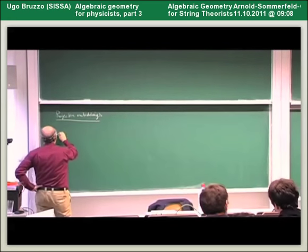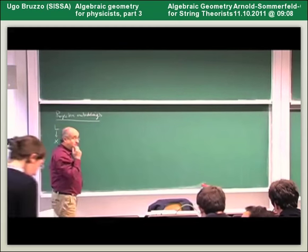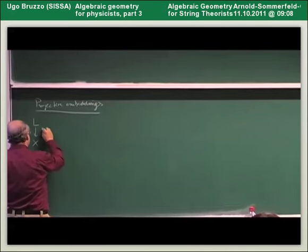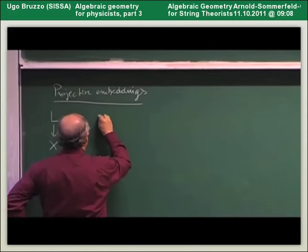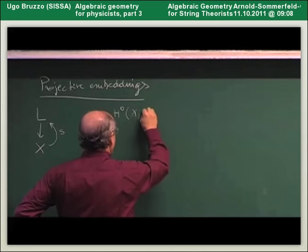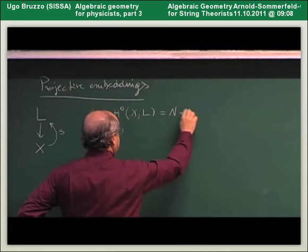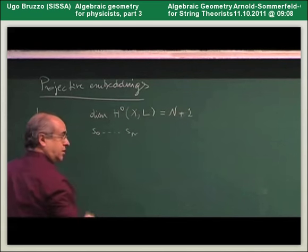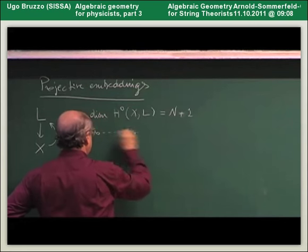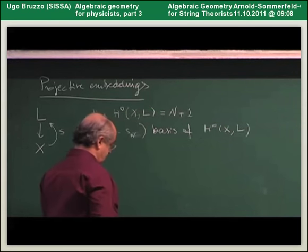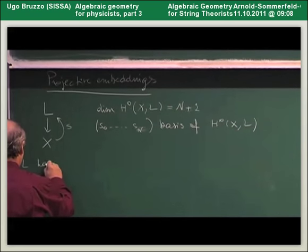We have a complex manifold X with a line bundle on top of it. We assume this line bundle has holomorphic global sections, and suppose the dimension of the space of global sections is N plus one. We fix a basis of this vector space. We were assuming that L is base point free,